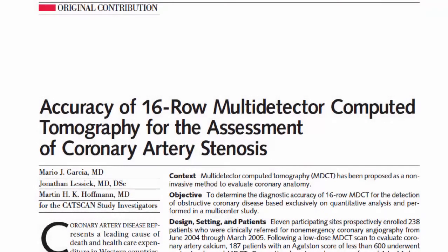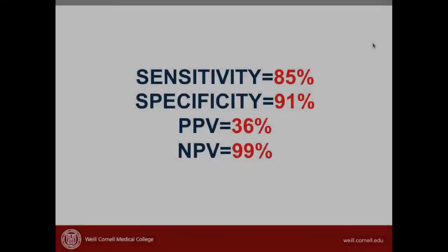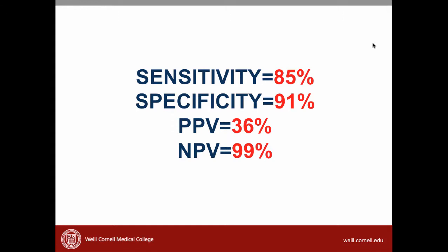To review, we have been appraising a study that looked at the use of multi-detector CT versus angiogram to diagnose coronary artery disease. We already calculated several key values. The sensitivity, which tells us how good the test is at giving us a positive result if the disease is present. The specificity, which tells us how good a test is at giving us a negative result if a disease is not present.